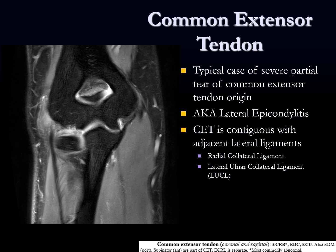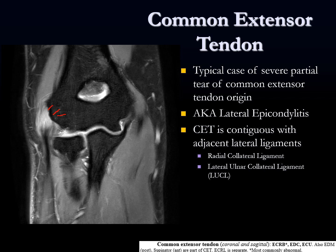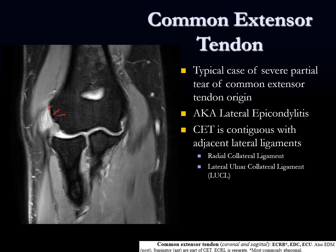Here's an example on scrollable images of common extensor tendon origin tendinosis and partial tear. Coming into it, this is a typical case we see — severe common extensor tendinosis and partial tearing, with also some probable ligament abnormality at the deep portion of the elbow.